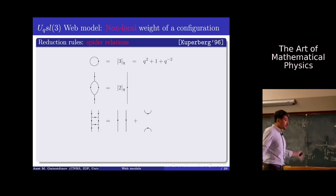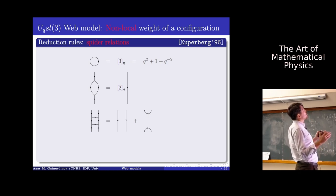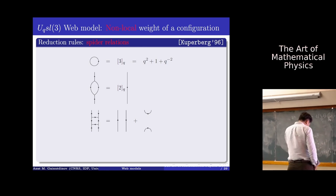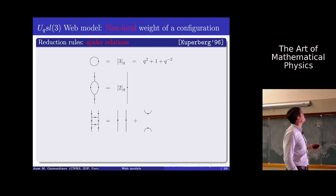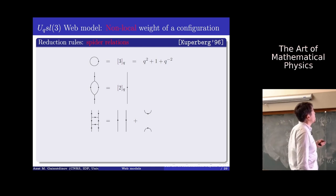Now imagine we have a configuration — a web — and we want to evaluate it. I will first describe the non-local or topological weight of the configuration. To evaluate a given configuration, we use the theory of U_q(SL3) invariants — the so-called spider relations introduced by Kuperberg. A loop is evaluated at the quantum number [3] = q² + 1 + q⁻². For a digon, we remove it and replace by a line times the quantum number [2]. And a square diagram is split into two types of connectivity.